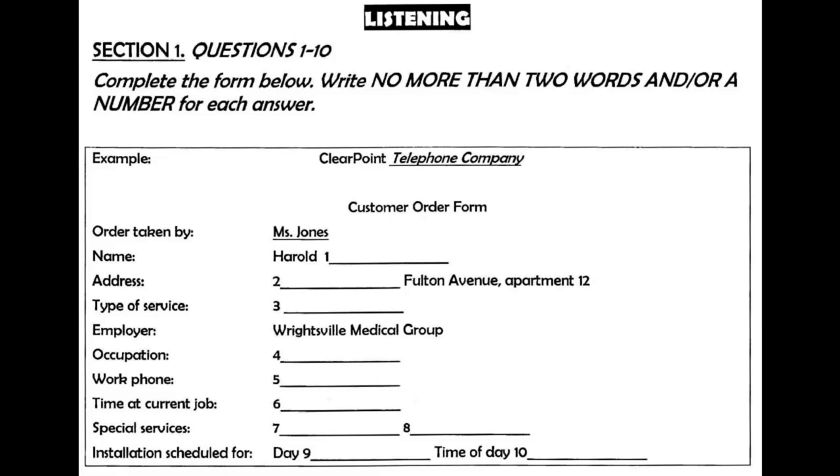And could I have your work phone number? It's 637-555-9014. Great. Just one more thing. I need to know how long you've been at your current job. I've been working there for quite a while now. Let me see. Eight... No, nine. That's right. Nine years. Good. You've been there long enough, so I don't need to ask about any other work history. Now, in addition to our basic phone service, we have several special services available.